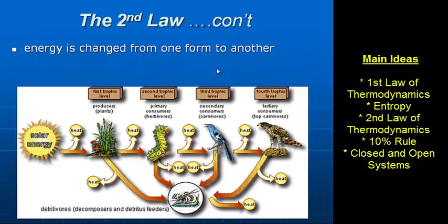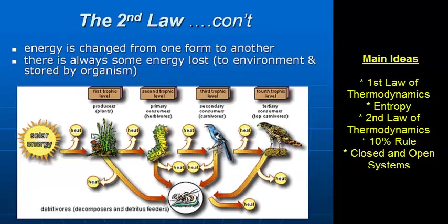With the second law, energy changes from one form to the next, and that energy is lost into the environment in the form of heat. Here are arrows illustrating that — in the other diagram they went down, but here they go across. Energy flows from the sun to plants, with heat given off through chemical reactions. Then from plants to this caterpillar — a primary consumer or herbivore — heat given off during digestion, and so on and so forth.